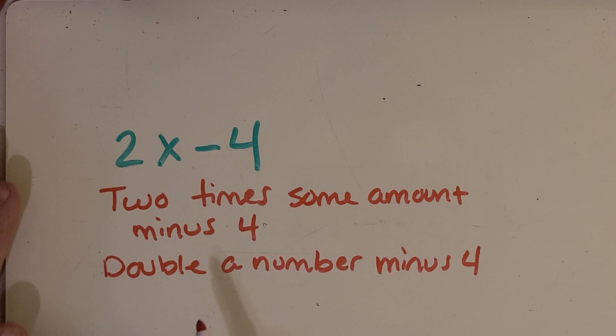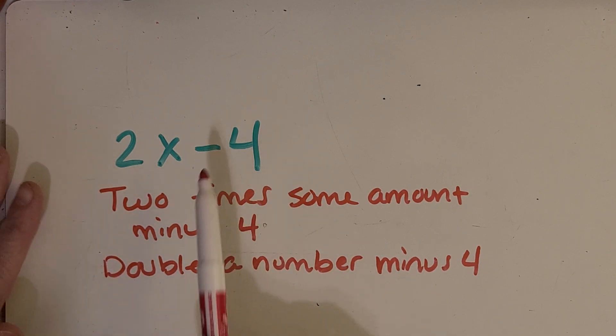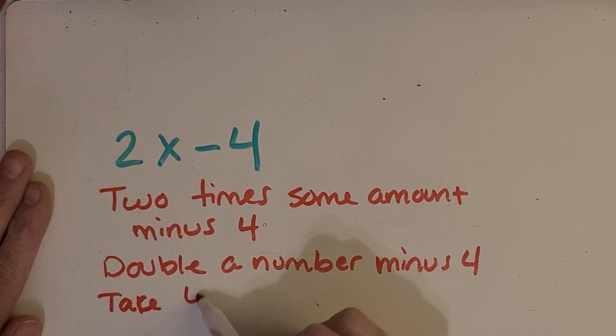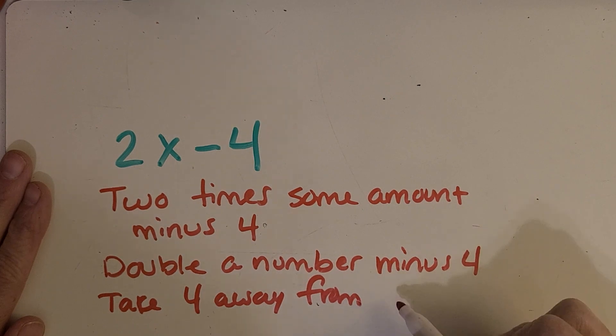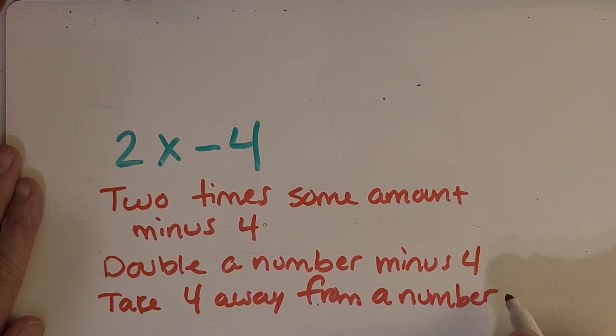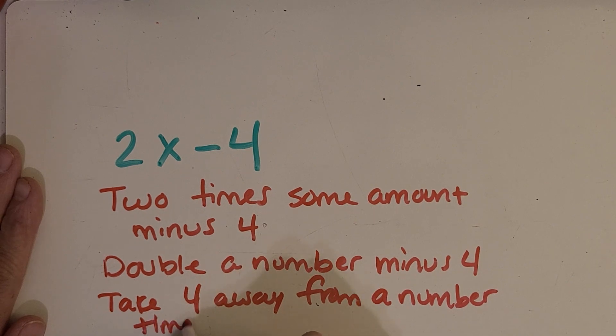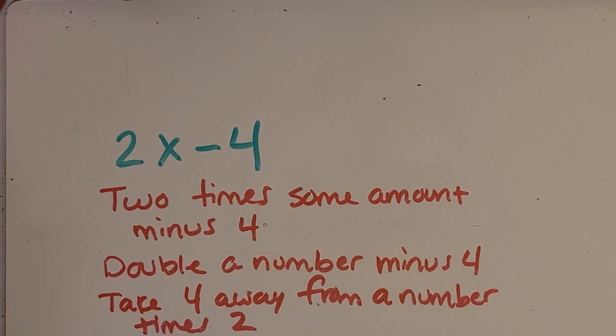Okay, here's some other options that might be similar to what you were thinking. So you could say double a number minus four. Then some people might have said it a little bit in a different order like take four away from a number times two. So see how that can be said in different ways but mean the same expression, it's equivalent to that same expression.